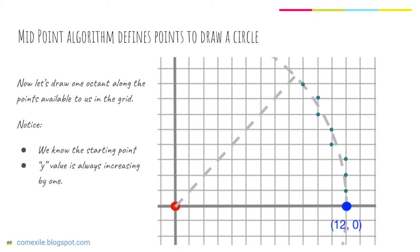We can see that the y value is always increasing by one. We can also notice that the x value is always either the same or decreasing by one.